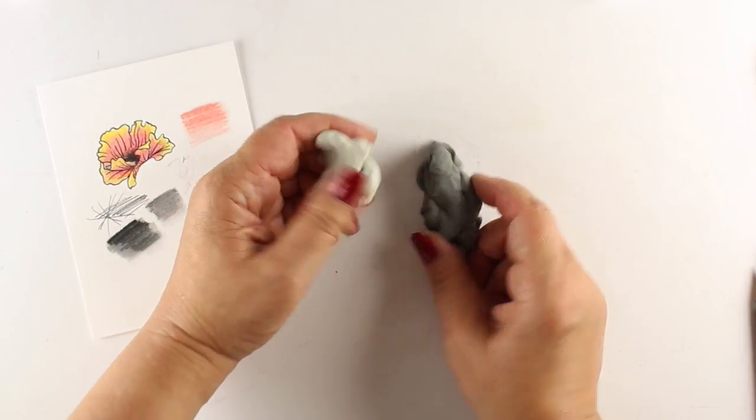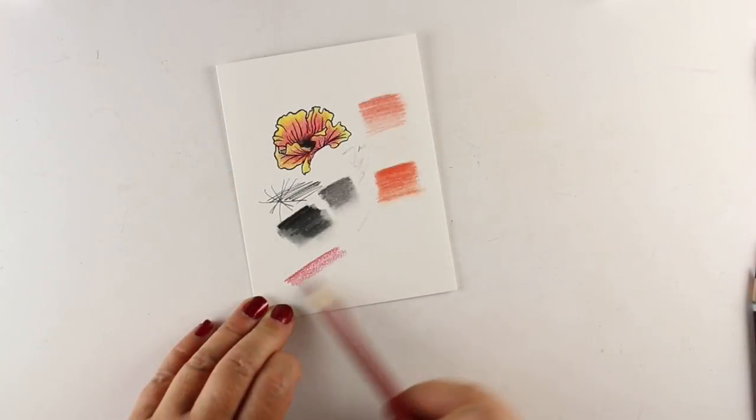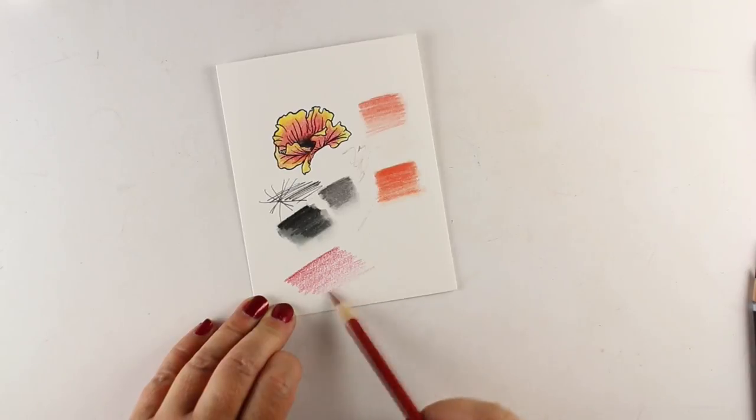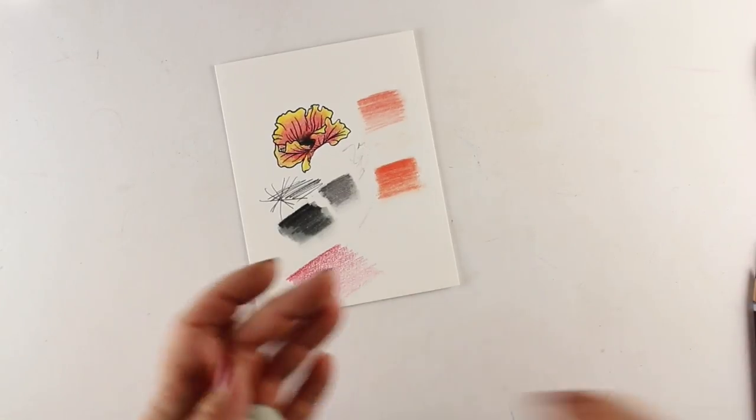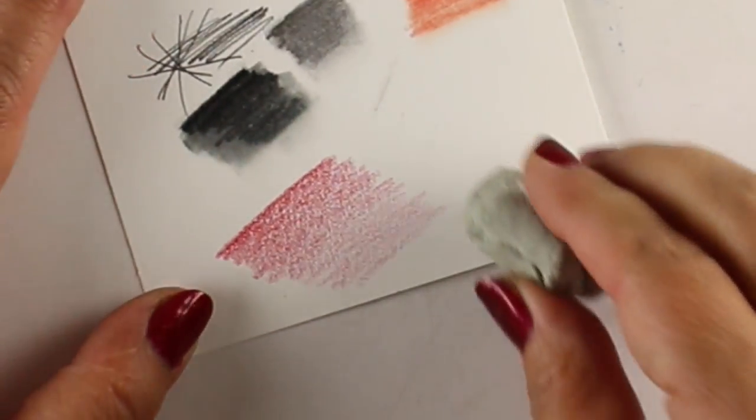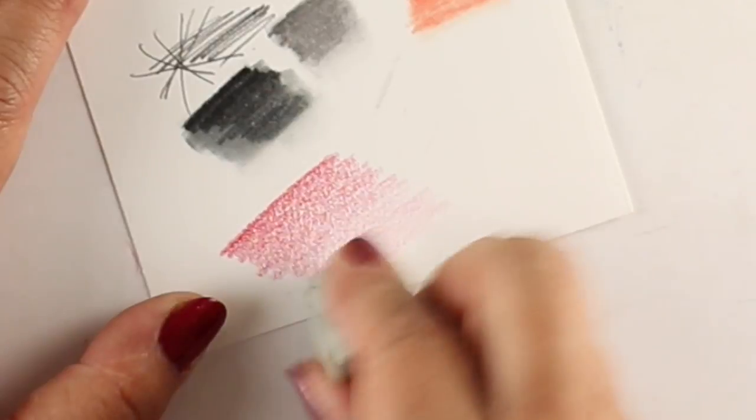It will eventually turn gray like this, and that's okay, it still works. I've been using it for 20 years and it's no big deal. I want to show you how you can use the kneaded eraser for blending. We'll use the other eraser too.